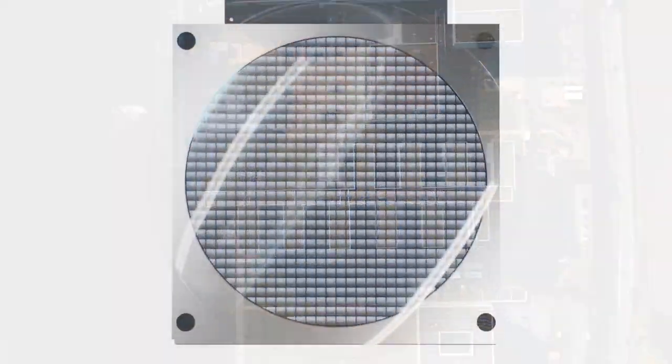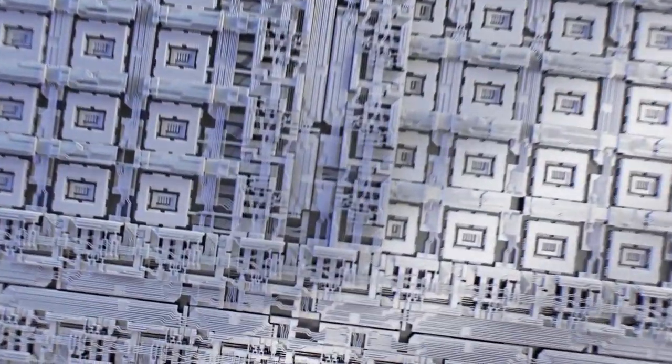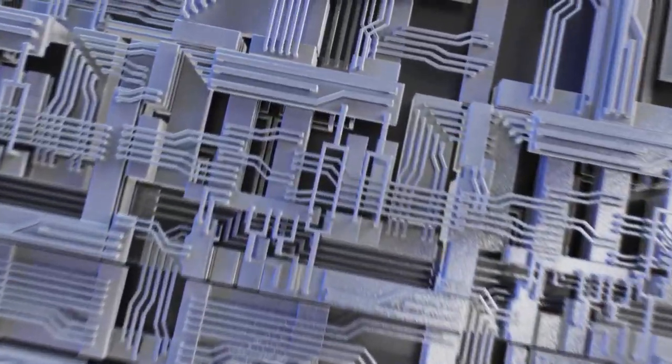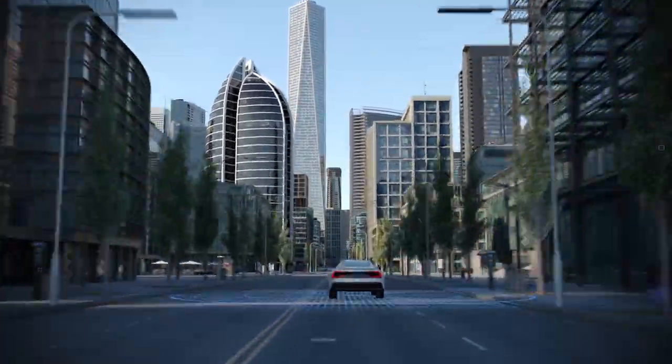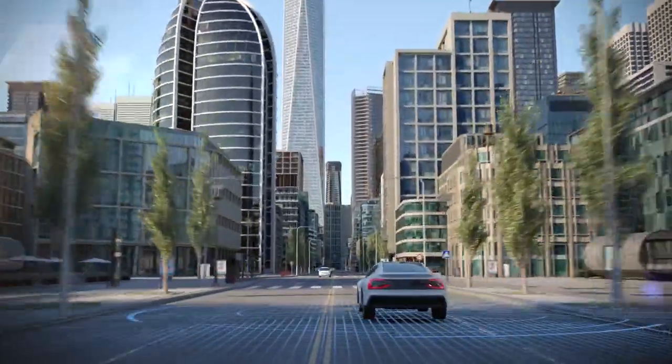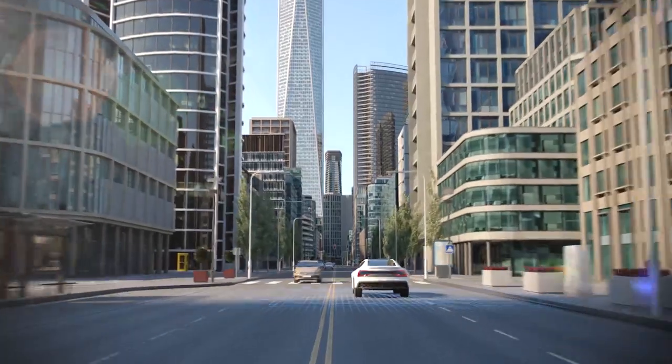Unsere EUV-Optiken ermöglichen die Herstellung von noch kleineren Chipstrukturen als jemals zuvor. Diese sind weniger als 20 Nanometer breit und damit rund 4000 Mal dünner als ein menschliches Haar. Zusammen mit ASML sind wir nicht nur Marktführer, sondern auch Innovationsführer.